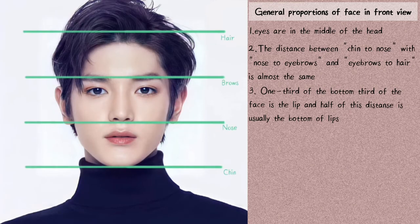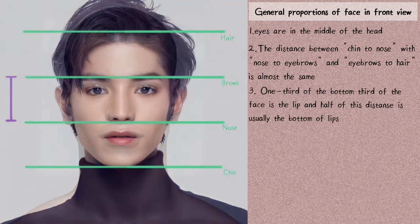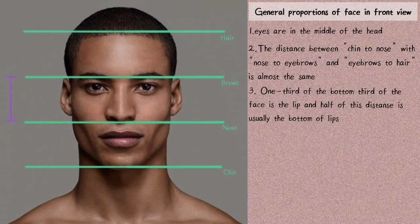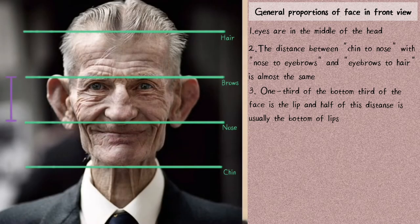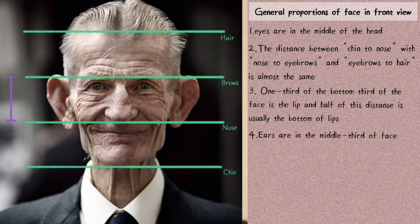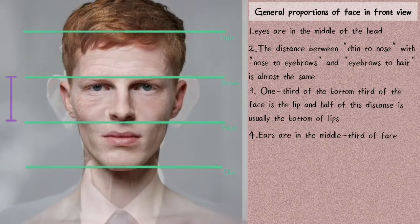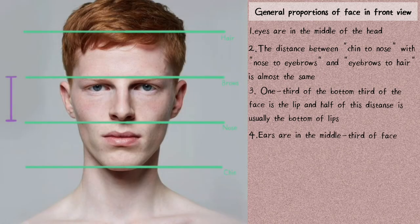Moving on to the ears: the placement of the ears is usually from the eyebrow line to the nose line. It can be a little higher or lower, smaller or even bigger than this distance. For example, older people have bigger ears because ears and nose keep growing our whole life, but generally ears are in the middle section of the face.